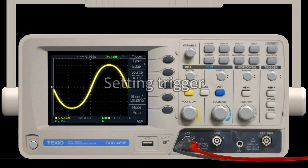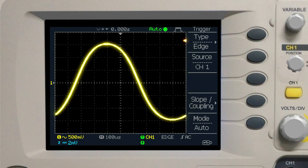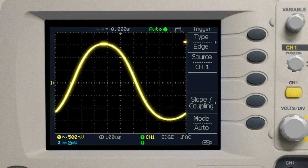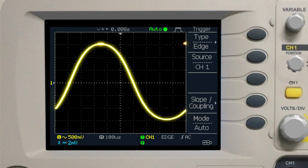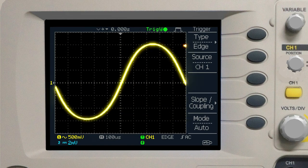Next, let's talk about the trigger. The trigger function is used to synchronize the signal cycle with the cycle of the LCD display. If the input signal and the screen display are not synchronized, the waveform will not stop. When the trigger function is activated, the waveform can be stopped and viewed.